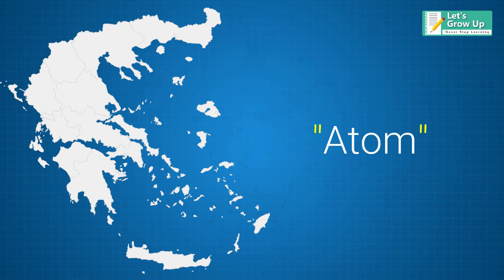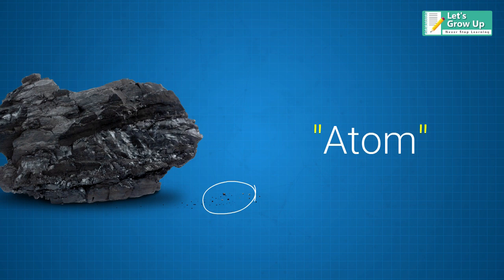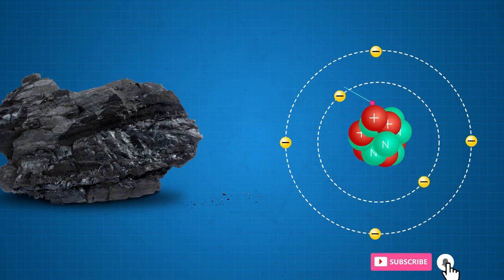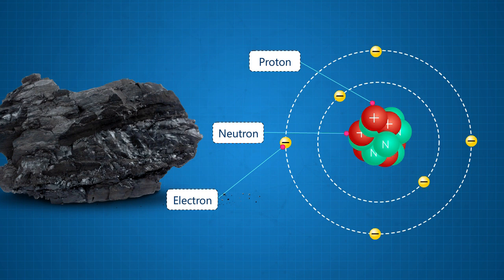It was thought that atoms were the smallest things in the universe and could not be divided. Now we know that atoms are made up of three particles: protons, neutrons, and electrons, which are composed of even smaller particles.